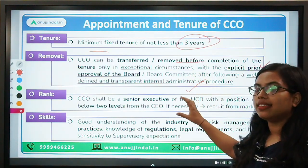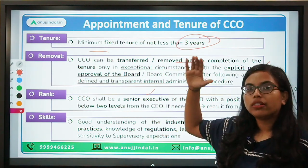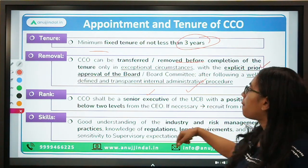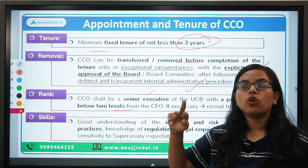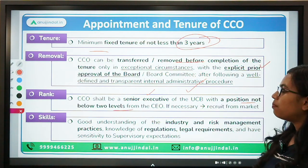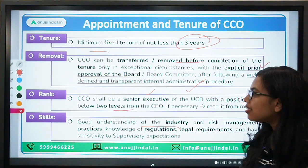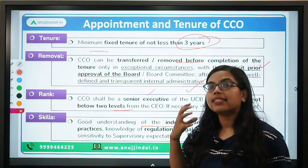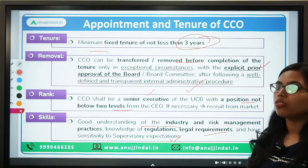Regarding ranking — the CCO will be a senior executive, and their position should not be below two levels from the CEO. Regarding skills — the CCO should have a good understanding of the industry and risk management processes, knowledge of regulations and legal requirements, and sensitivity to work according to the expectations of the supervisors.